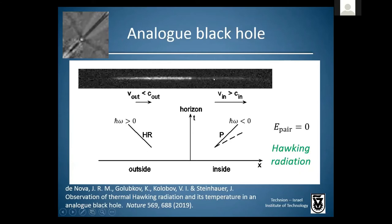Here is one realization of our analog black hole. It's about 8,000 atoms — a 1D Bose-Einstein condensate flowing from left to right. In one region it's flowing faster than the speed of sound, and in the region where the density is higher it's flowing slower than the speed of sound. A phonon directed against the flow can't go forward in the laboratory frame in the supersonic region, so this is analogous to inside a black hole.